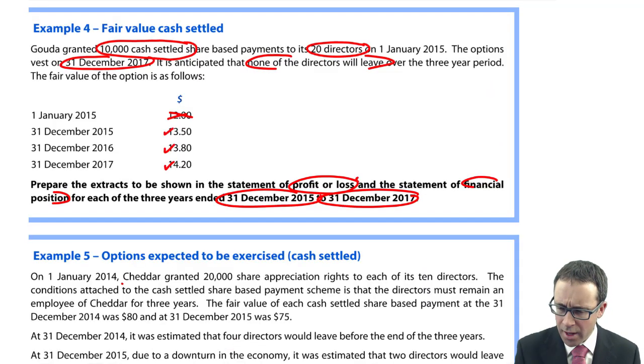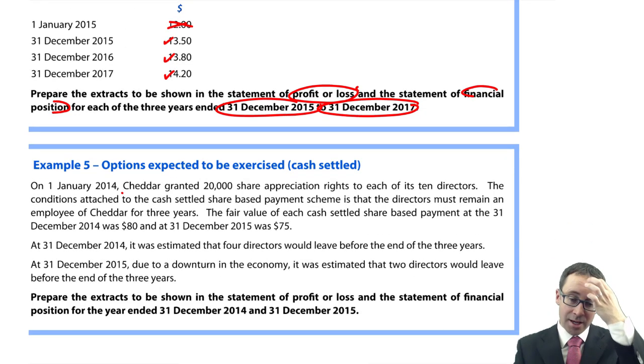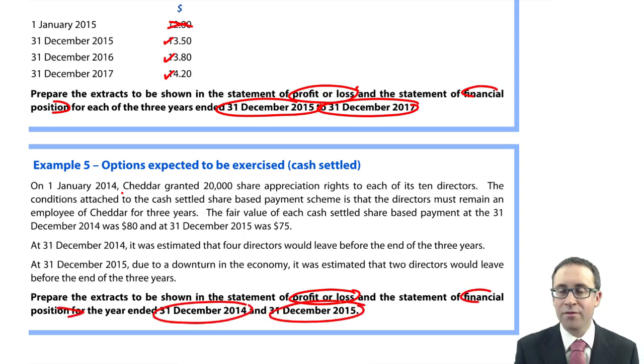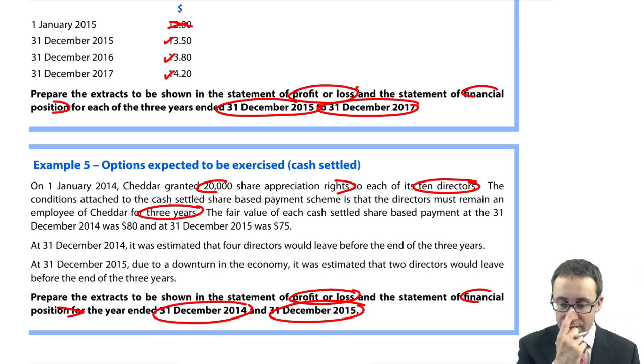There's another example, Example number five. It says prepare the extract to be shown in the statement of profit or loss once again and the statement of financial position for two years, December 2014 and December 2015. The previous example had no changes in the number of directors. This one will.